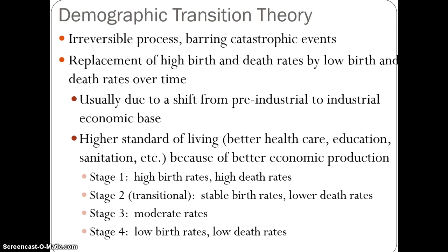Stage 1 is going to be a time of very low growth, but we have both high birth and death rates. Stage 2 is transitional — this is the major change where most population growth occurs. Birth rates do not change much, but the death rate plummets, causing higher life expectancy and population increase. Stage 3 has moderate rates with a little bit of growth. Stage 4 is when birth rates and death rates level out and you have very little growth.